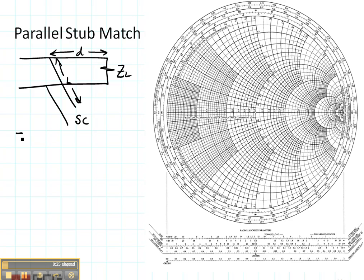So the first thing that I'm going to do is normalize and plot my ZL. Let's just use the same one, 2 plus j2. So again, that is right there. There's my ZL.